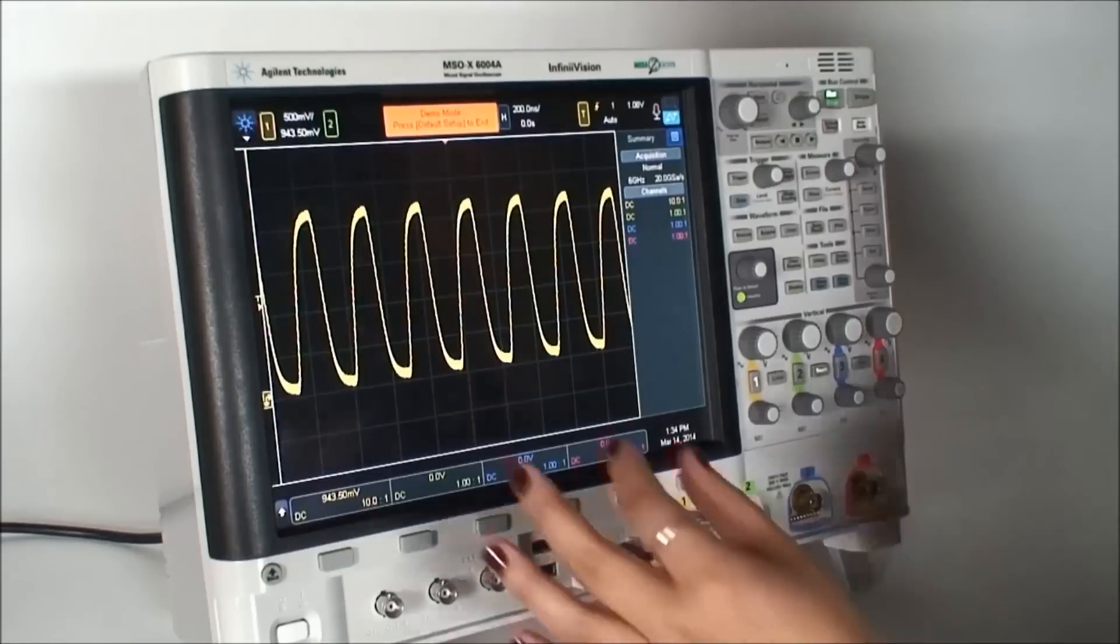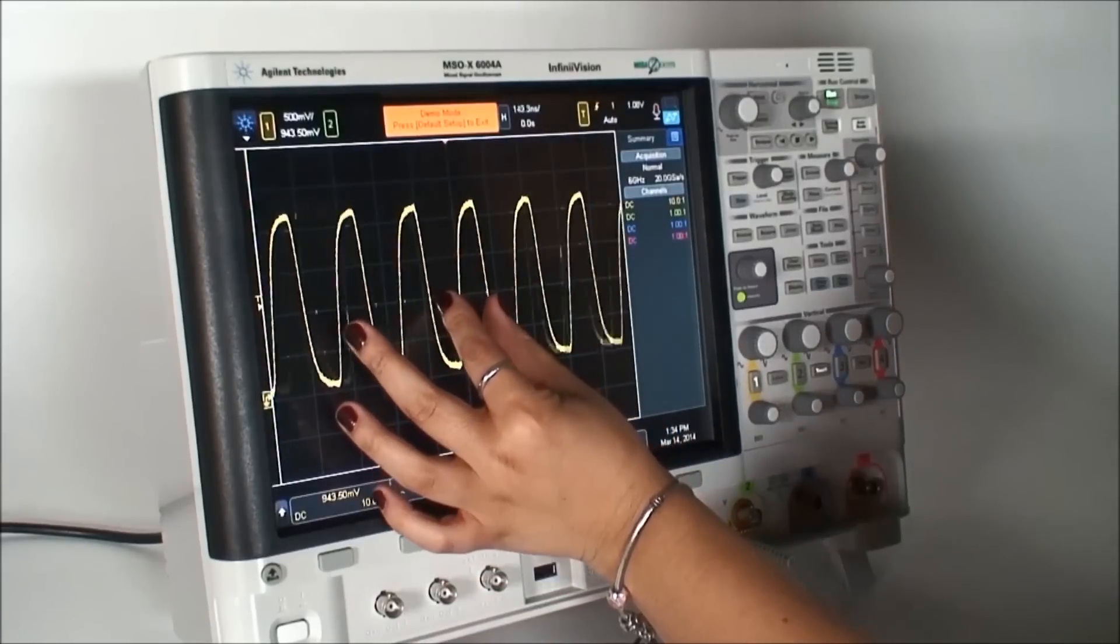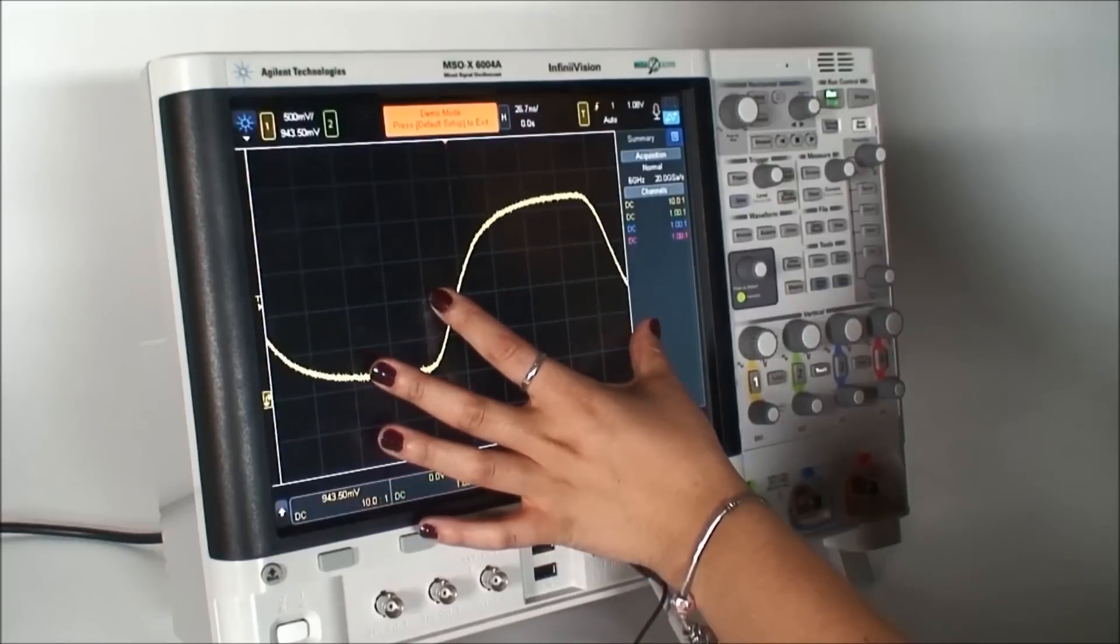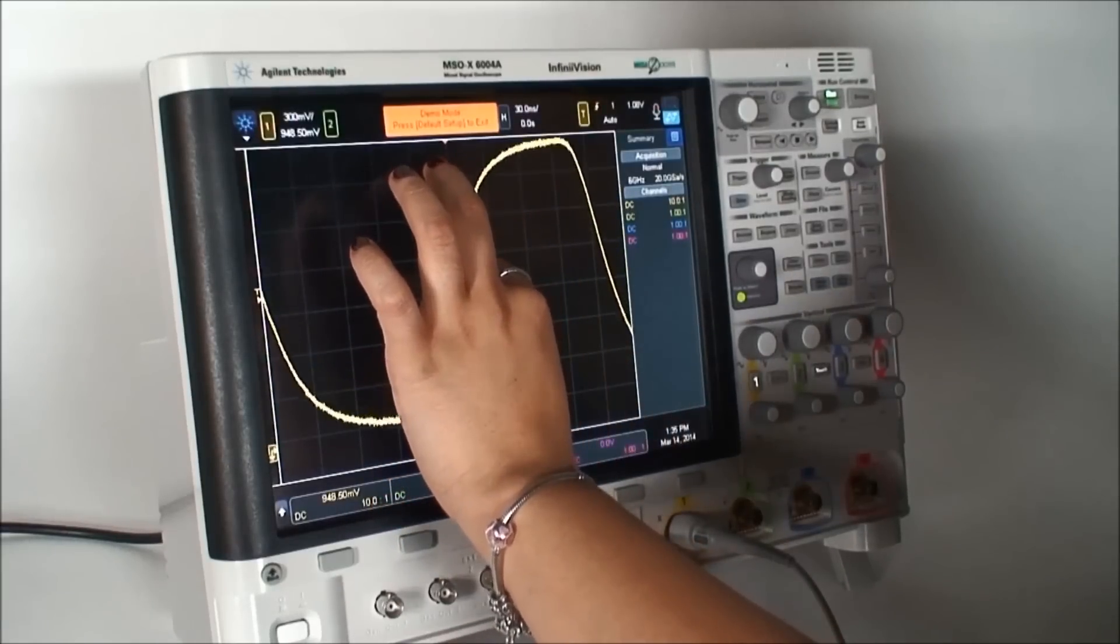Here's an example of a clock with an infrequent glitch. Let's zoom in to get a better look. With the 6000x series dual touch touchscreen, we can easily adjust the settings to get exactly what we want on the display.